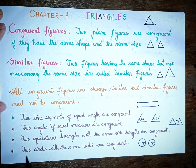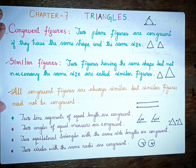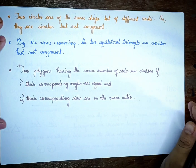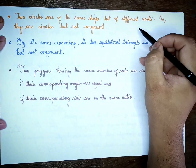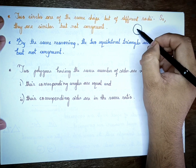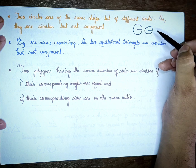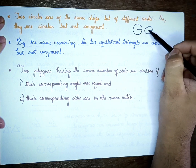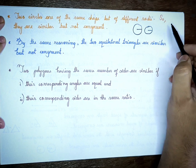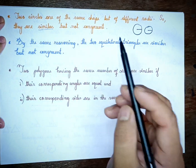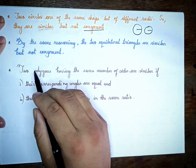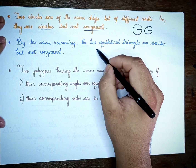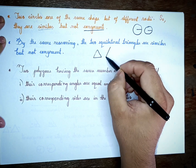Two circles are of the same shape, so circles are always similar, but if they have different radii they are not congruent. By the same reason, two equilateral triangles are similar but not congruent if they have different side lengths.